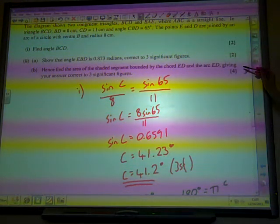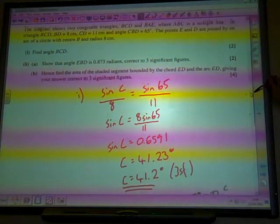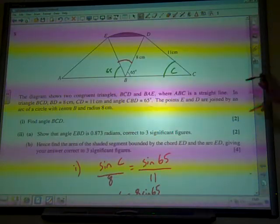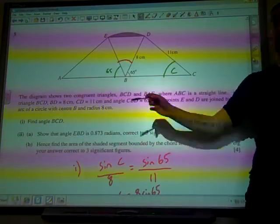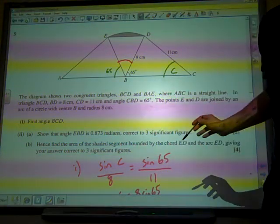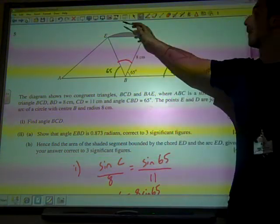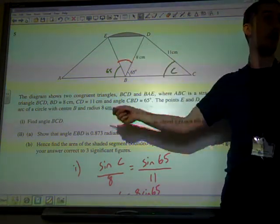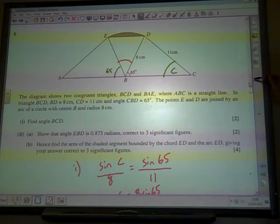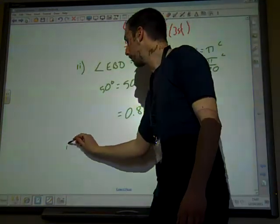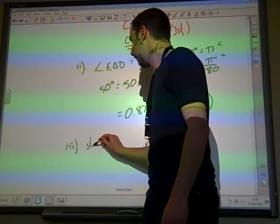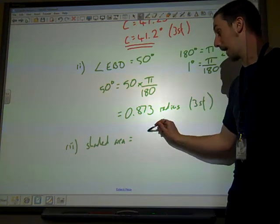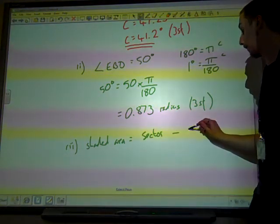Part 3 of 2, Part B. Hence, find the area of the shaded segment bounded by the chord ED and the arc ED, giving your answer correct to three significant figures. Well, this is, if we find the area of this sector and if we find the area of the triangle and subtract them, then the difference is the shaded area. So for that last part, what we want to do is, the shaded area is the sector minus the triangle.